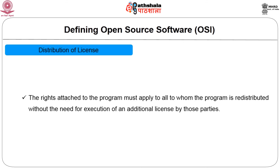The seventh point is distribution of license. The rights attached to the program must apply to all to whom the program is redistributed, without the need for execution of any additional license. So a single license applies to the entire software, and the group using the license can redistribute the software using the same license — no additional licenses are needed.